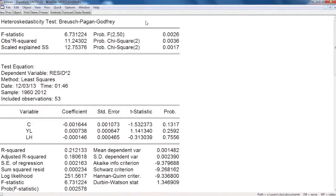And on this test, we have a probability of 0.0026, which allows us to reject the null hypothesis and to conclude that there is heteroskedasticity in this model.